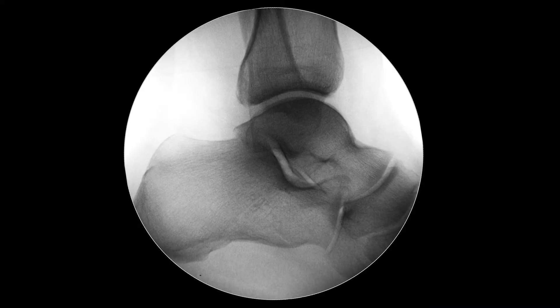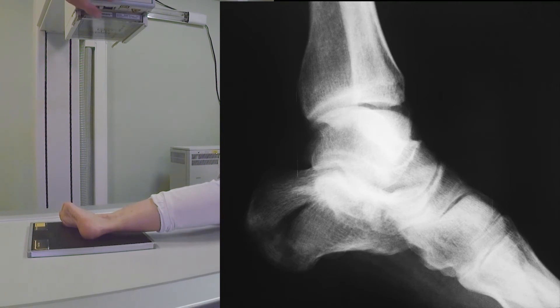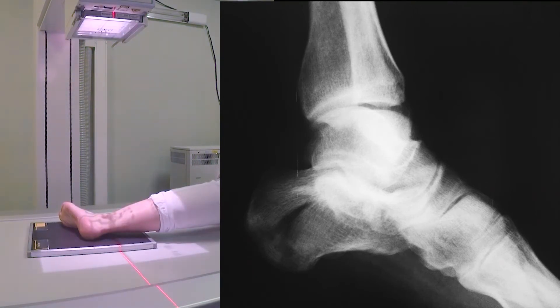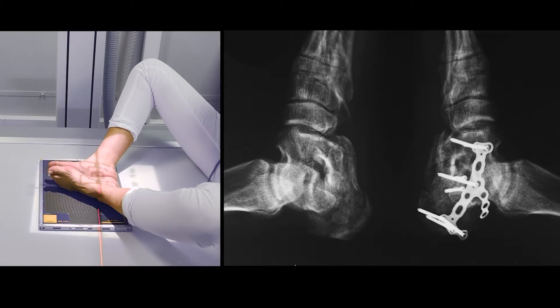The criterion of correct projection is a precise talar dome figure without double contour. Positioning the patient on the opposite side or radiography of both feet simultaneously in frog position leads to incorrect x-ray view. Malrotation is the most common defect of this procedure. It is desirable to make a view of the whole foot so as not to miss other injuries not yet detected during physical examination.